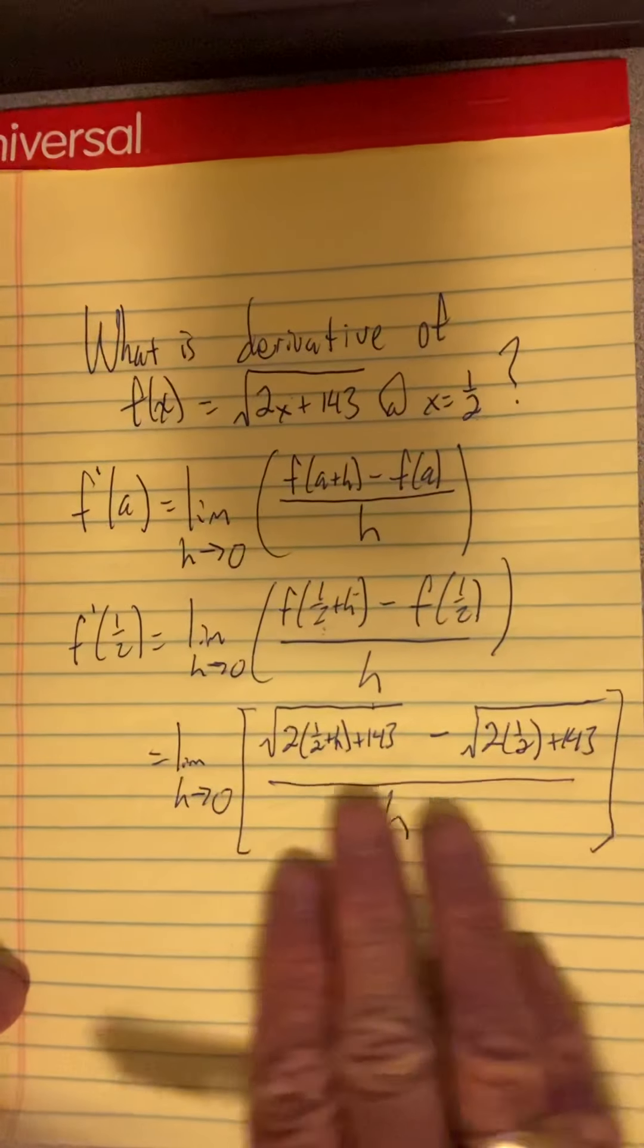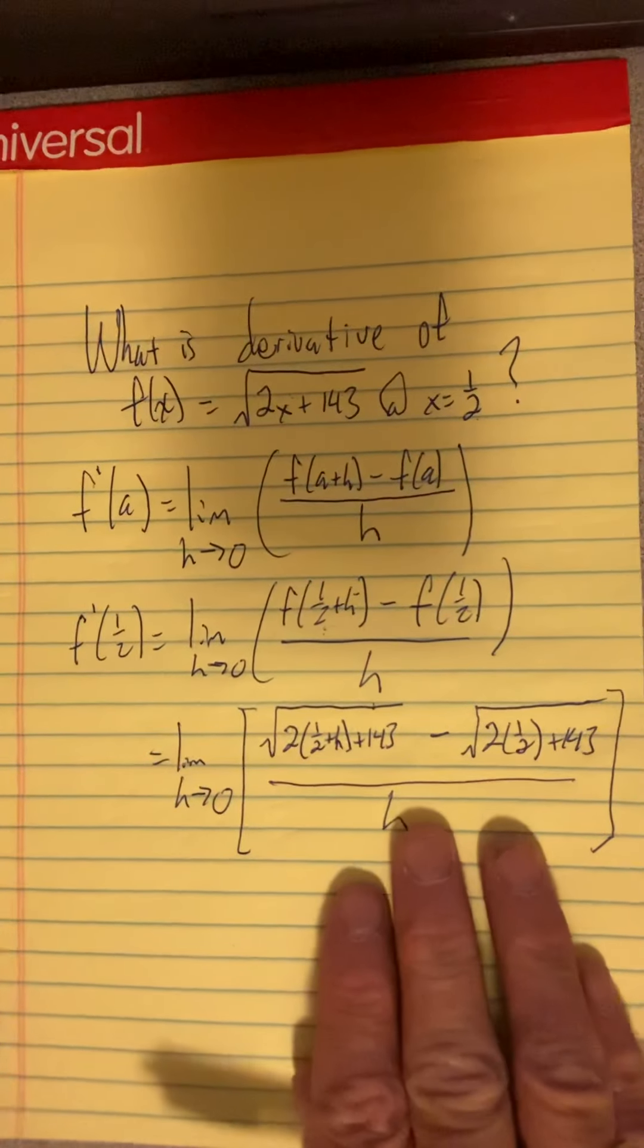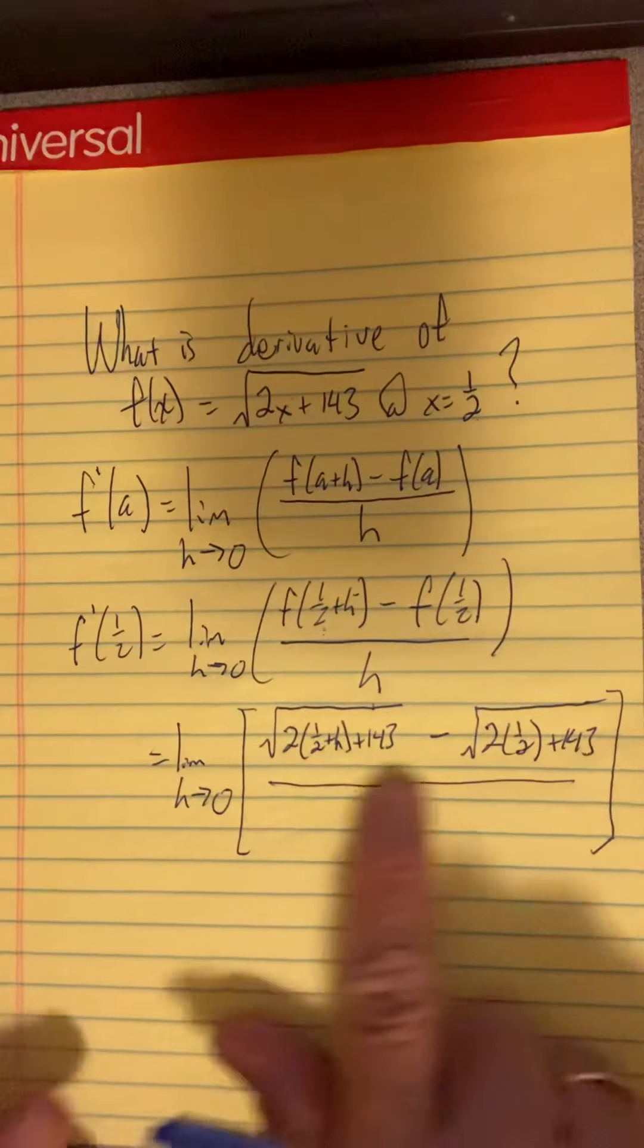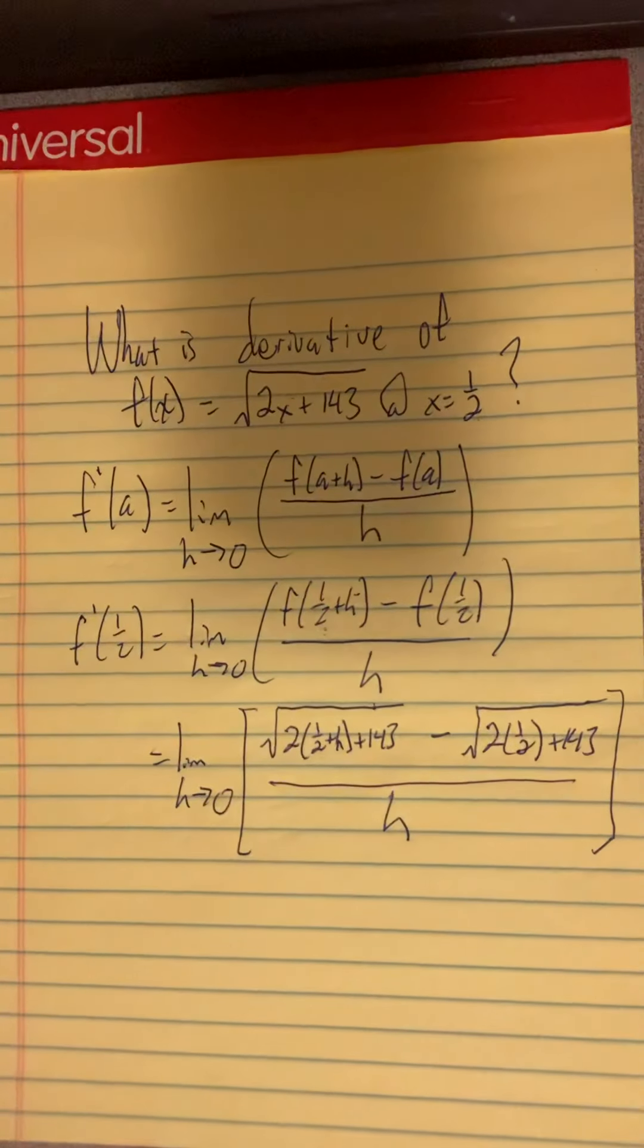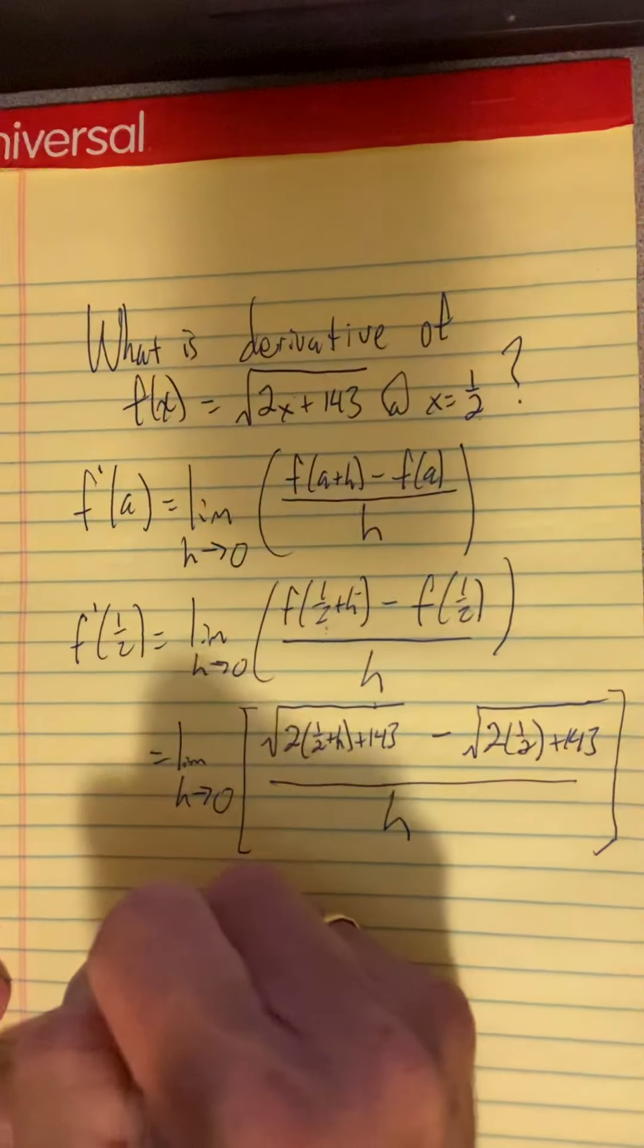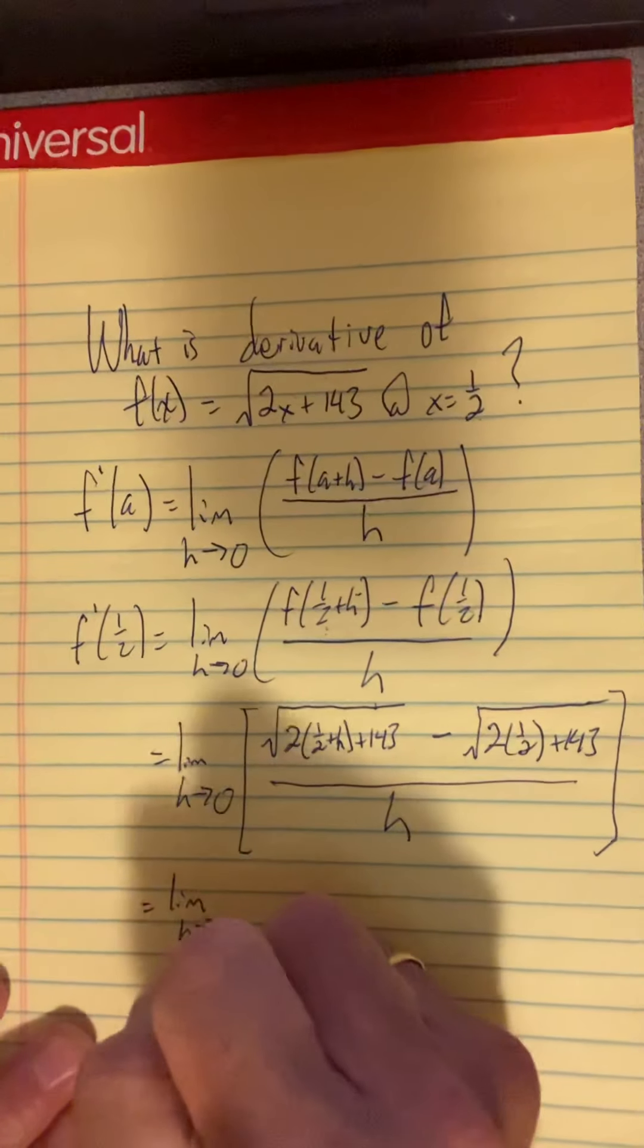Now we need to compute this limit. The very first thing we're going to do is simplify inside the radical. Let's see if I have room on this page for maybe one more line before we switch papers.